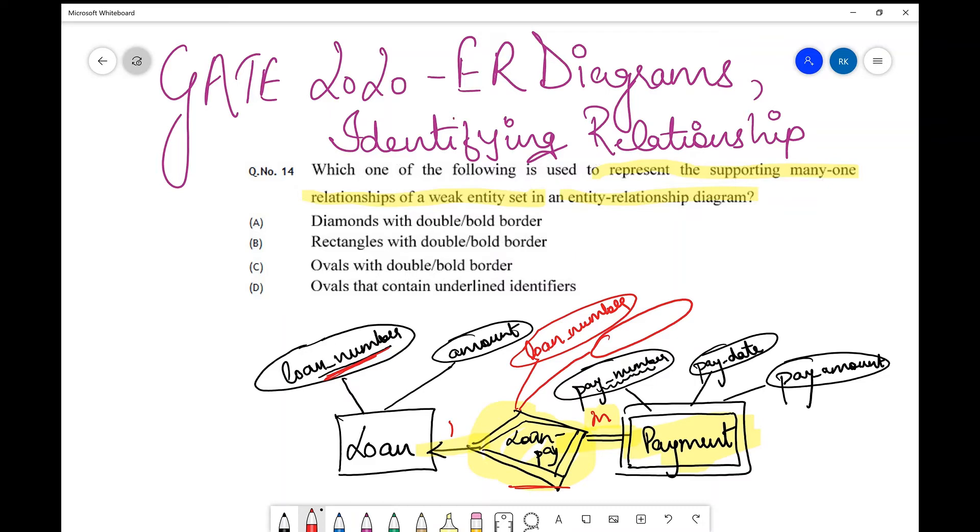The pay number over here is not the primary key, but essentially it helps us discriminate between a subset of records present in the payment entity set. Therefore, when you convert this entity set into a relational table, the other thing which comes over here is pay number. This becomes an identifying relationship for this payment table in this manner.